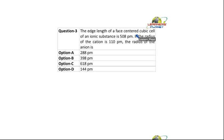The edge length of a face centered cubic cell of an ionic substance is 508 picometer. If the radius of the cation is 110 picometer, the radius of the anion is.